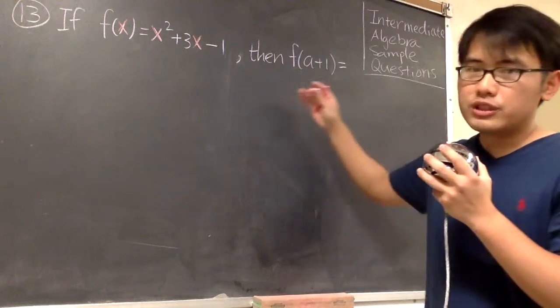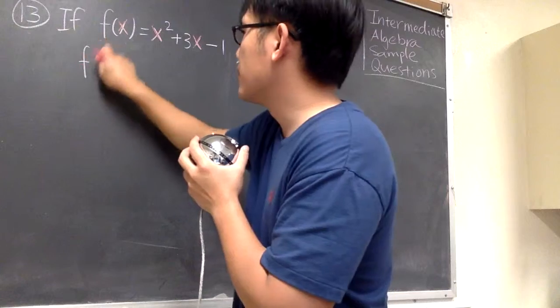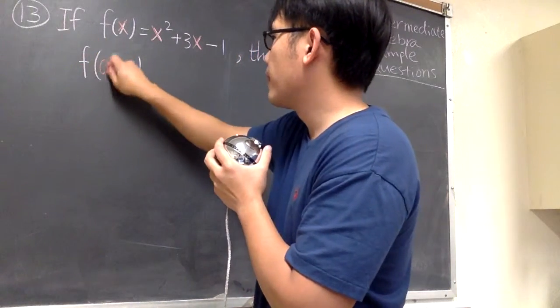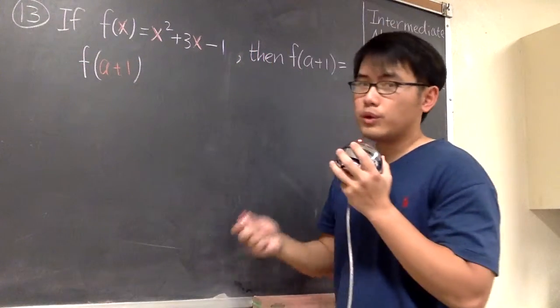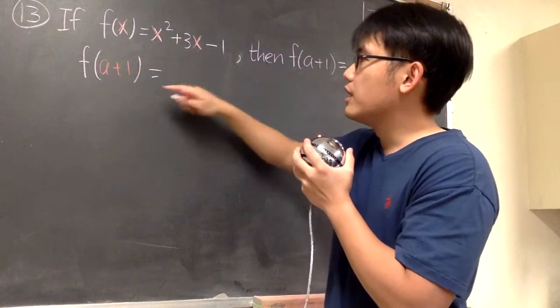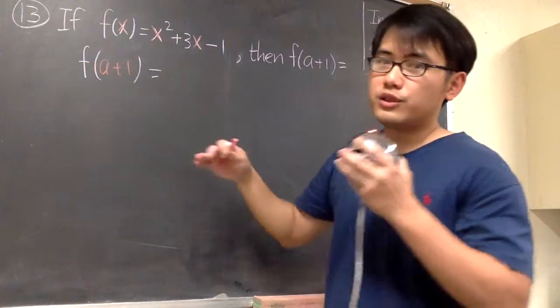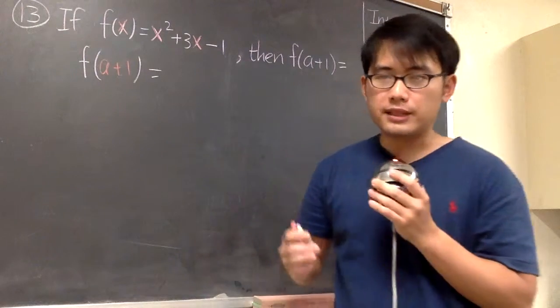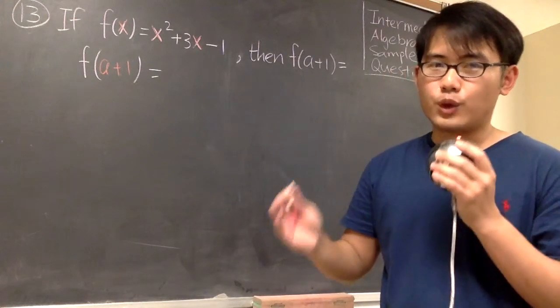Let me just put down the f(a+1) right here. What we want to do is refer to the original function where you see the x, we are just going to change them into a+1, and then we will use parentheses accordingly.